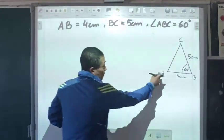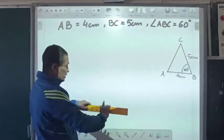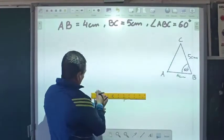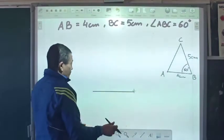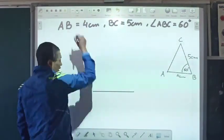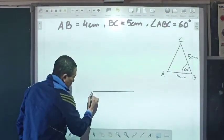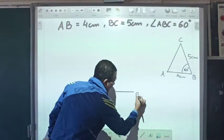So taking that into account, let's construct. AB is 4 cm, so I can draw the baseline. That will be 4 cm. So this is considered as A and this one here is considered as B.